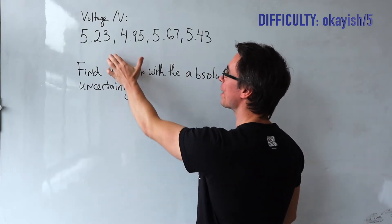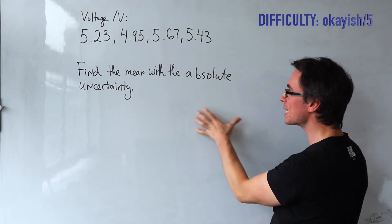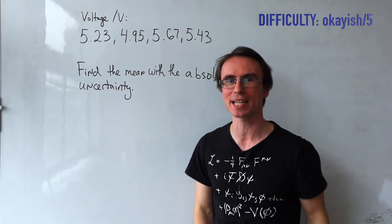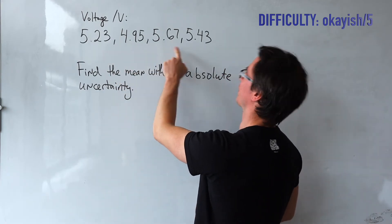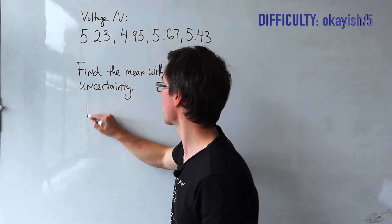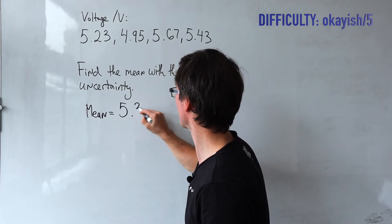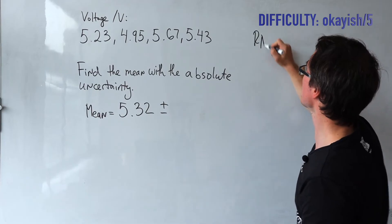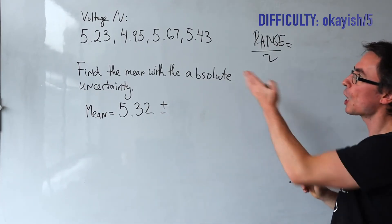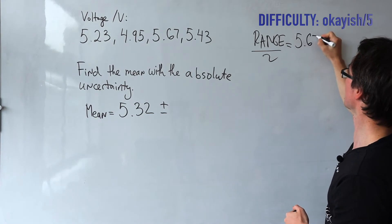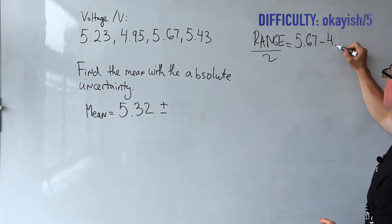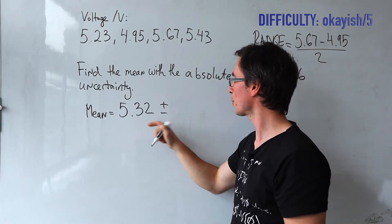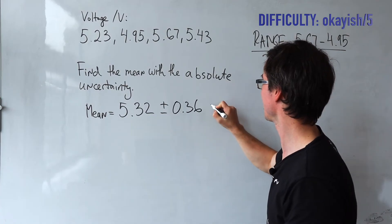Next question: we have voltage data with several values and need to find the mean and absolute uncertainty. The rule is that absolute uncertainty equals half the range of the data. The mean of 5.23, 4.95, 5.67, and 5.43 divided by 4 gives 5.32 volts. The uncertainty is half the range: the largest value, 5.67, minus the smallest, 4.95, divided by 2, giving 0.36 volts. So the result is 5.32 plus or minus 0.36 volts.